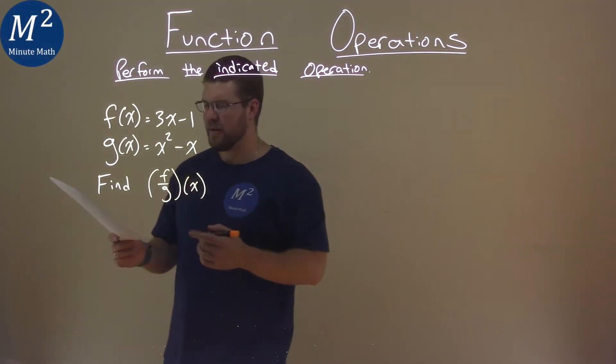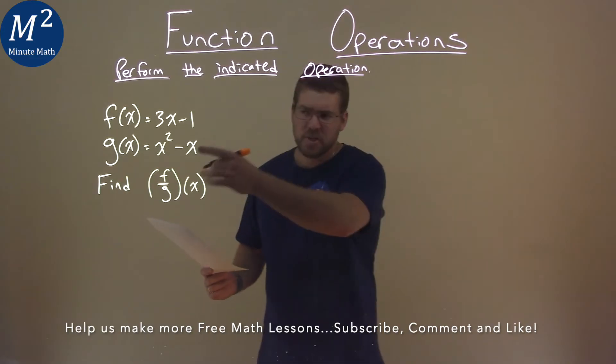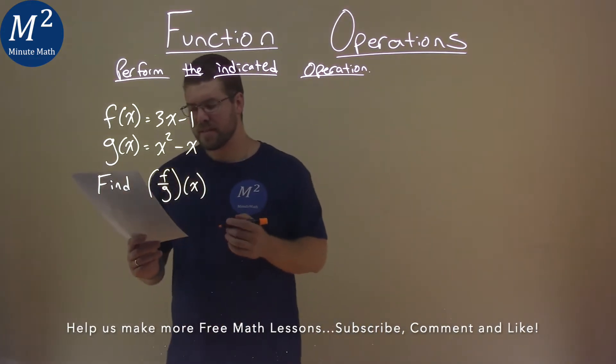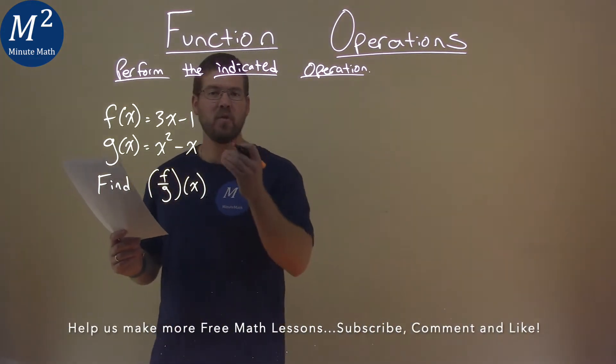We're given this problem right here. f of x equals 3x minus 1, and g of x equals x squared minus x, and we need to find f over g of x.